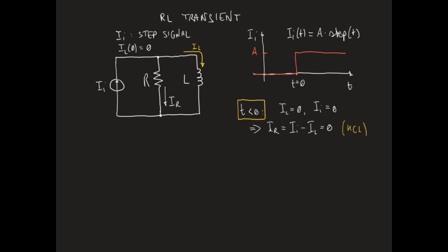From this, we get that the voltage VL across the inductor, which is the same as the voltage across the resistor since the two components are in parallel, is given by IR times R, and is therefore equal to zero.